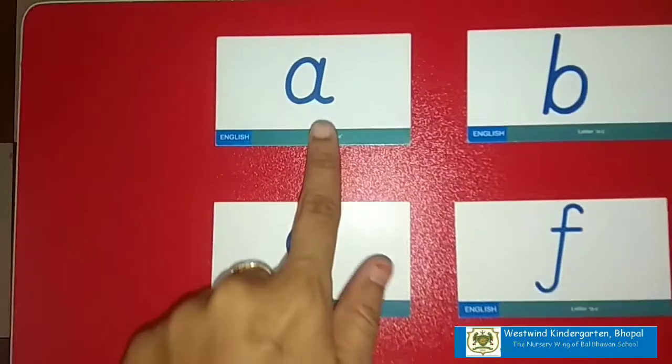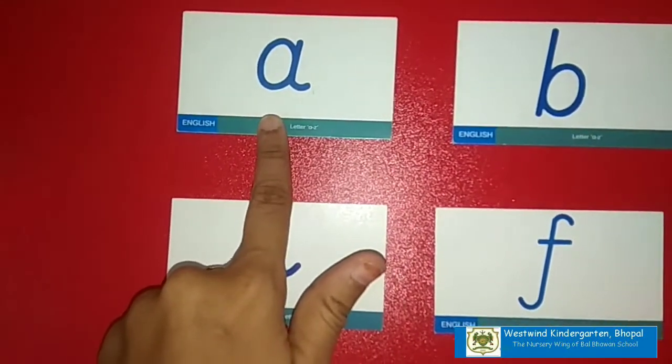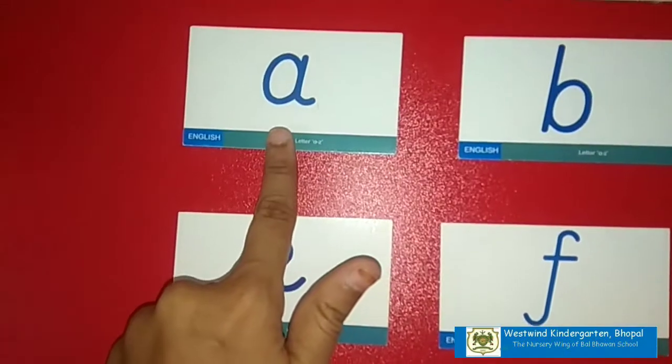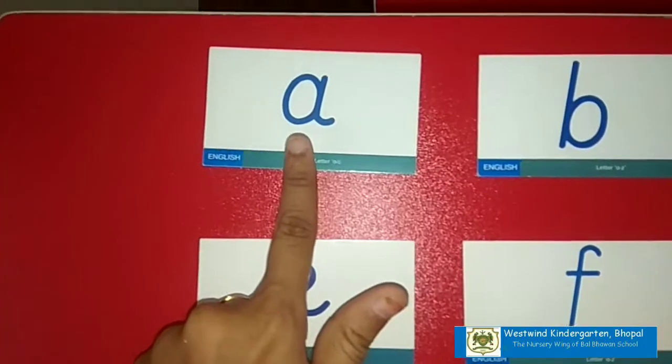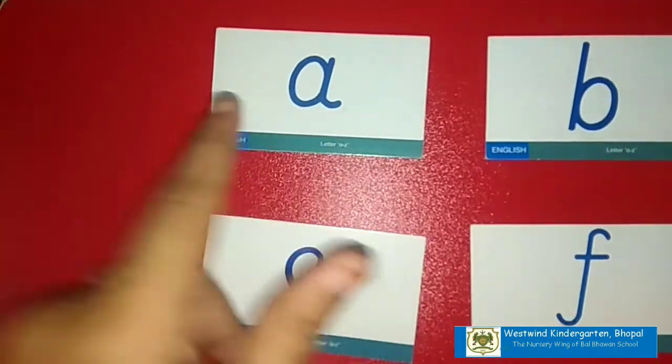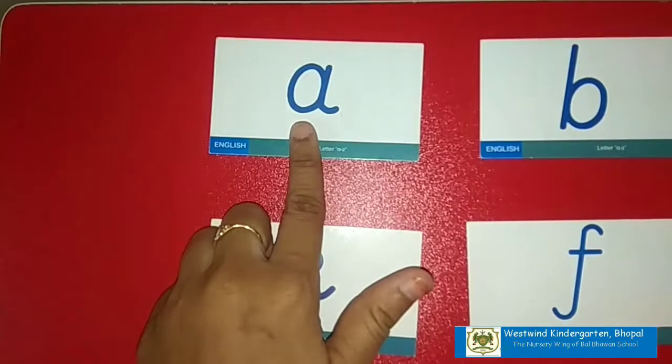Can you identify which letter is this? Yes, this is small letter A. And the sound of letter A is A. Open your mouth bigger and say A.